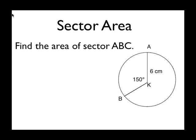In our last screencast, we found that the arc length is like the crust of a pizza, while a sector is like the whole slice of pizza. So here we have a circle with a radius of 6 centimeters and a central angle of 150 degrees.